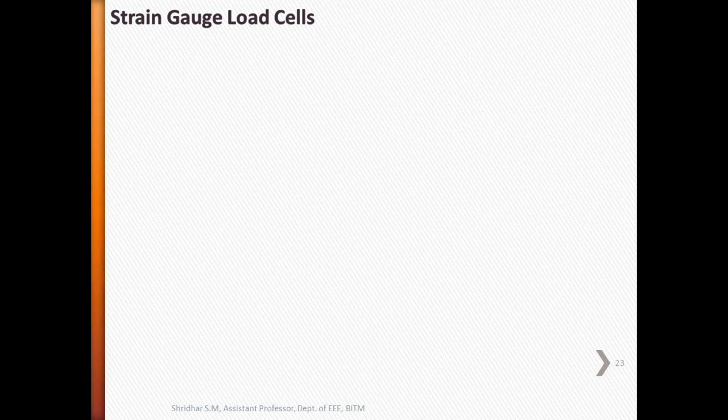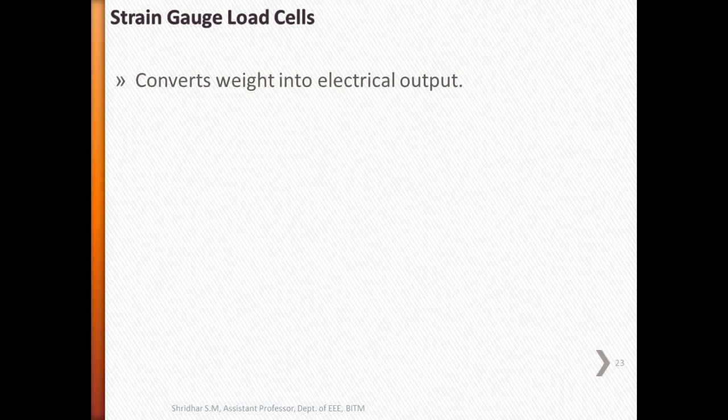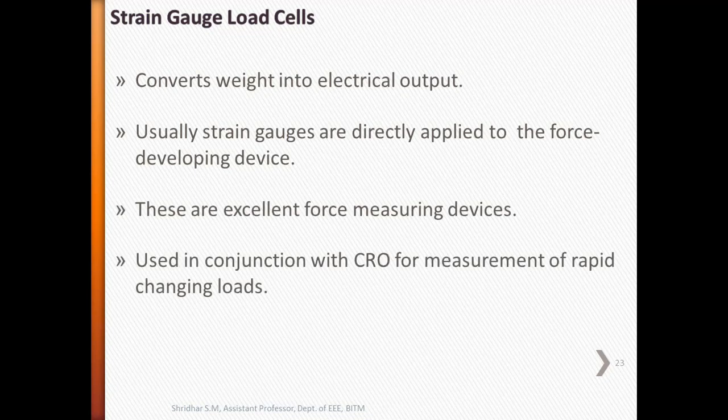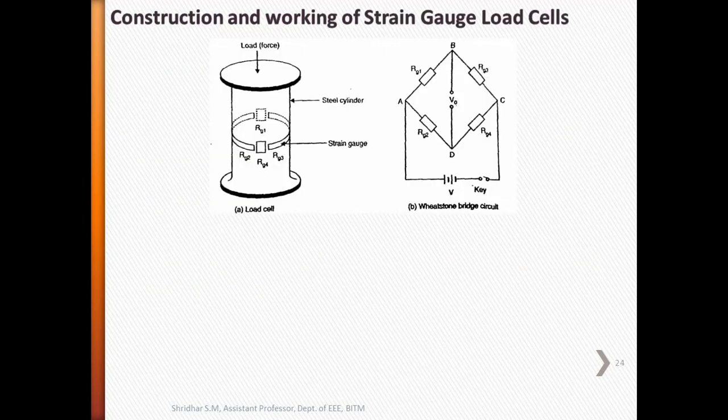Next, we'll discuss strain gauge load cells. These cells convert weight or force into electrical output, which are provided by strain gauges. Usually, the strain gauges are directly applied to the force developing device and the device is calibrated against the gauge output. So these are excellent for force measuring. These are used in conjunction with CRO for measurement of rapid changing loads.